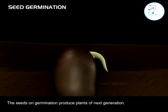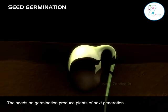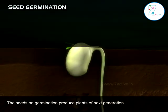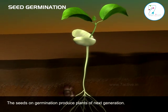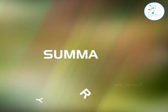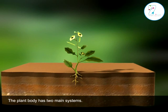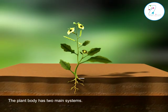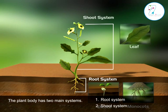Fruits and seeds are developed from the ovary after pollination and fertilization. The seeds on germination produce plants of the next generation. Summary: The plant body has two main systems — one, root system; two, shoot system.